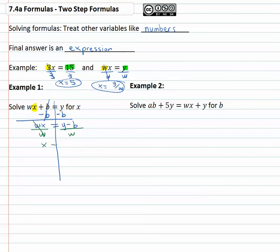The x is now alone, and it's equal to this fraction, y minus b over w. When the x is alone, we are done. We know what x represents, the fraction y minus b over w.